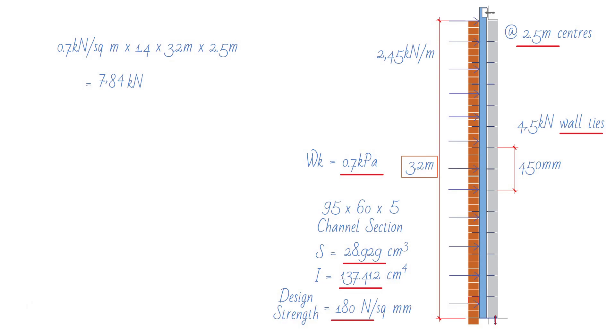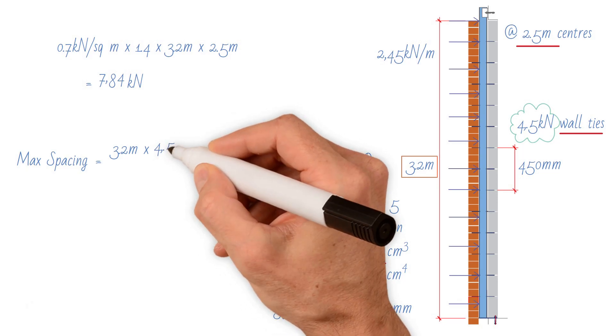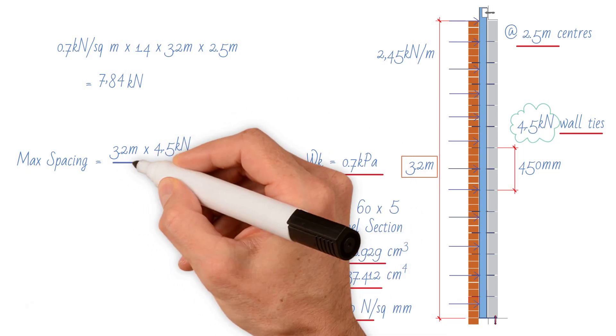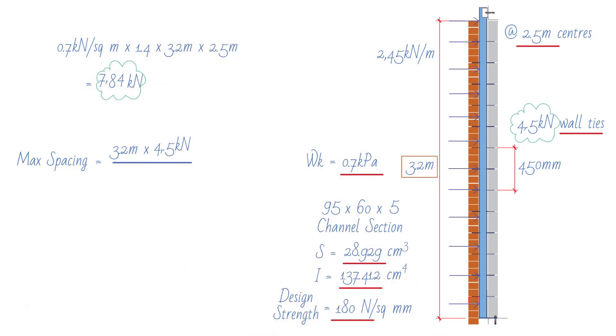Therefore, the maximum spacing between ties equals height 3.2 meters times wall ties capacity in tension and compression 4.5 kilonewtons, divided by total load on windpost 7.84 kilonewtons, divided by partial safety factor for wall ties, which is 3.